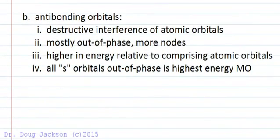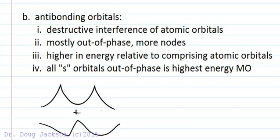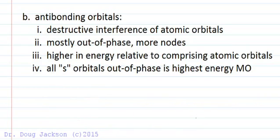Antibonding orbitals, on the other hand, are destructive interference. They're out of phase interaction, just like two ocean waves might be out of phase with one another. When we add those together we would get a flat line; the wave cancels out. Destructive interference, out of phase, and we have more nodes.